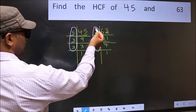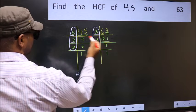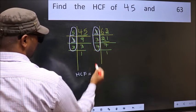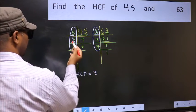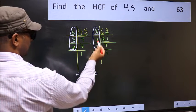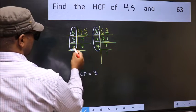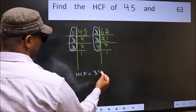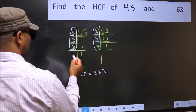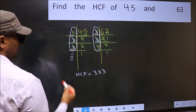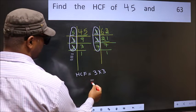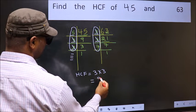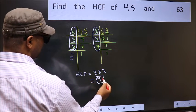Next number 3. Do we have 3 here? Yes. So cut 3 right here. No more numbers have been left out. So our HCF is 3 into 3, 9. This is our HCF.